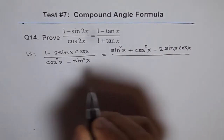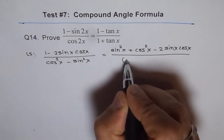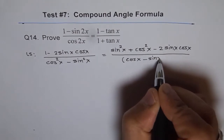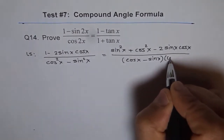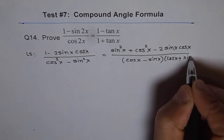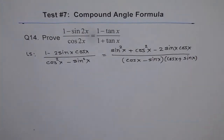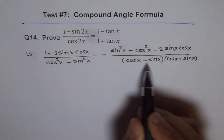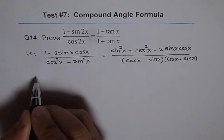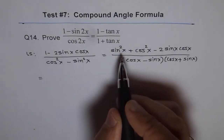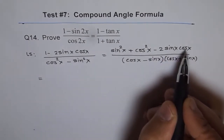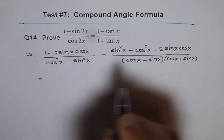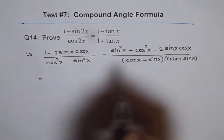The denominator, cos squared x minus sine squared x, can be written as cos x minus sine x times cos x plus sine x — it's a difference of squares, so it can be written as a product of a sum and a difference. The numerator, sine squared x minus 2 sine x cos x plus cos squared x, is sine x minus cos x, whole squared.